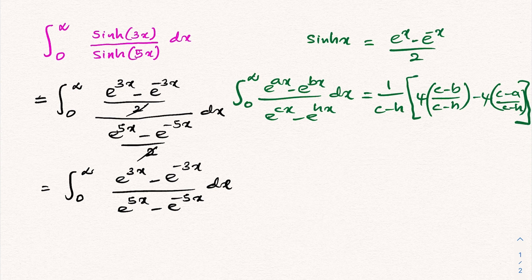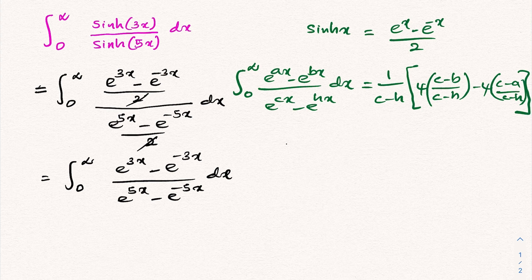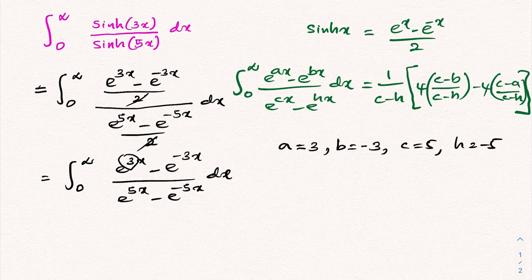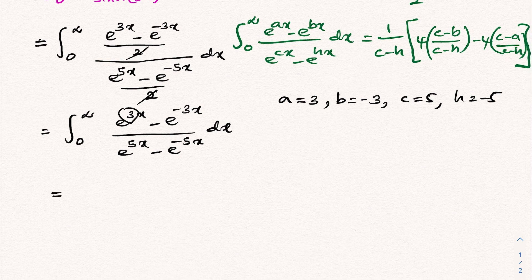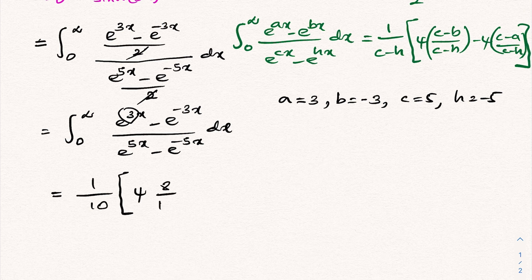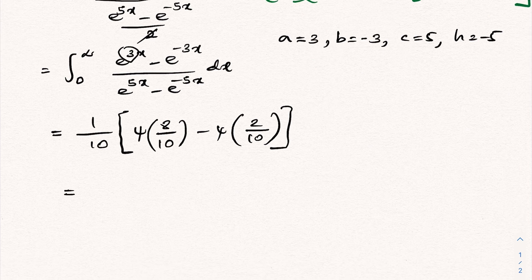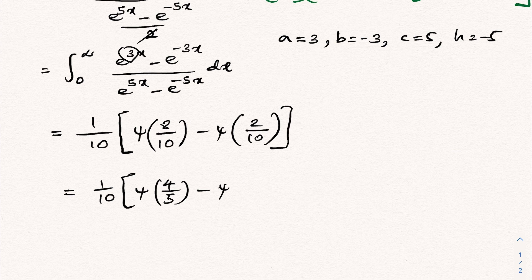Now we identify our parameters: a = 3, b = -3, c = 5, and h = -5. So our integral equals 1/(c minus h) = 1/(5 minus (minus 5)) = 1/10, times digamma of (c minus b)/(c minus h) = 8/10, minus digamma of (c minus a)/(c minus h) = 2/10. Simplifying: 1/10 times [digamma(4/5) minus digamma(1/5)].